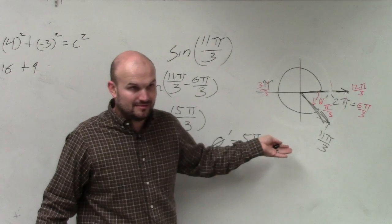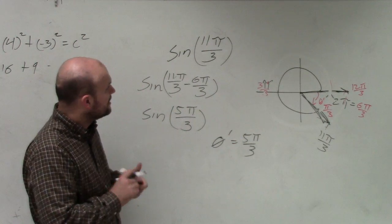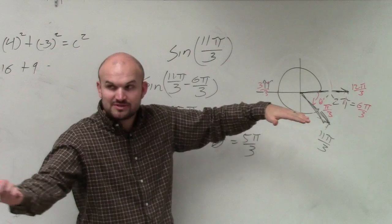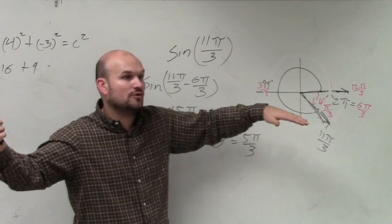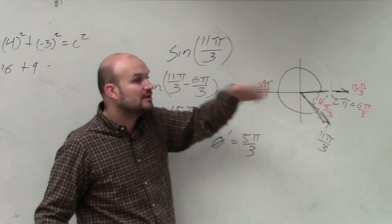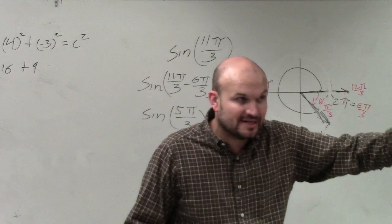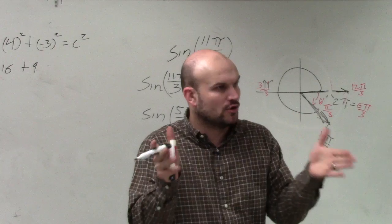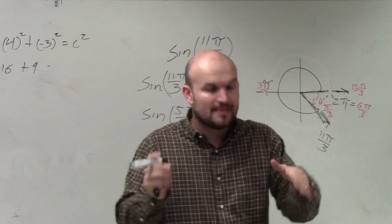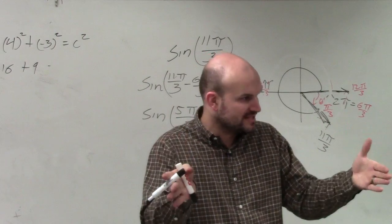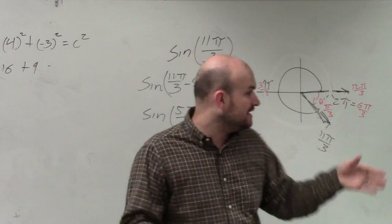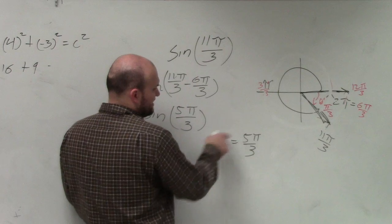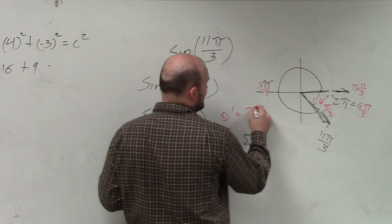All I'm saying is: when you have angles greater than all the way around a circle — greater than 360 or greater than 2 pi — subtract to find a coterminal angle between 0 and 2 pi, or 0 and 360. Once you know the angle is between 0 and 360, use the reference angle to find an angle you can work with. If theta is 5 pi over 3, then theta prime is pi over 3.